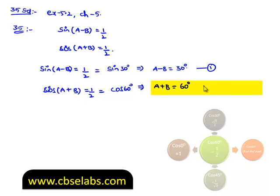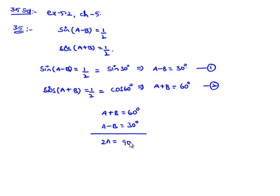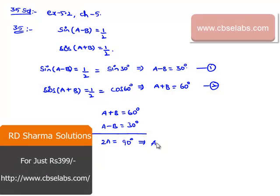Let us solve both equations. a plus b is equal to 60 degrees, a minus b is equal to 30 degrees. Let us add both equations then we get 2a is equal to 90 degrees, that implies a is equal to 90 degrees by 2, that is 45 degrees.